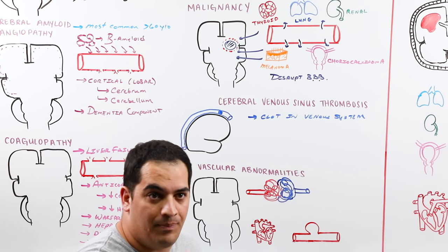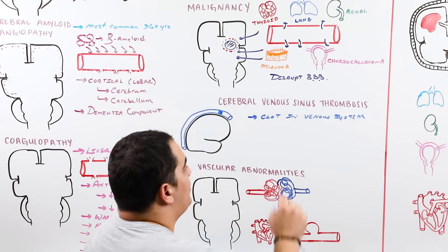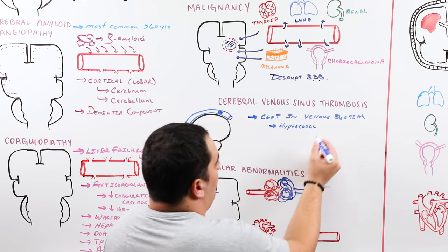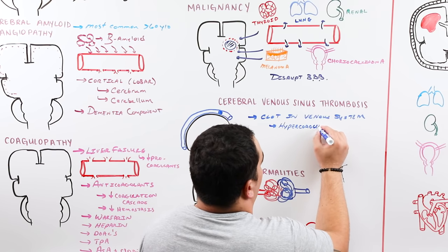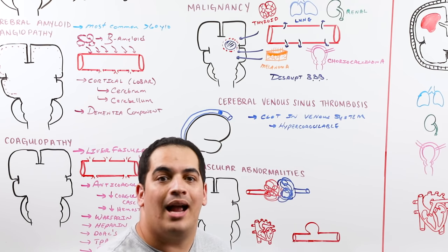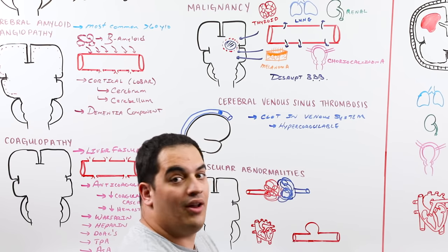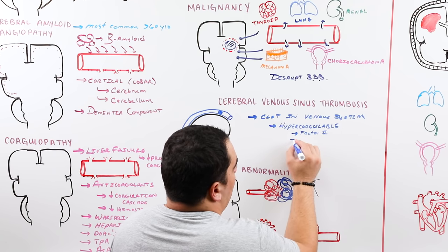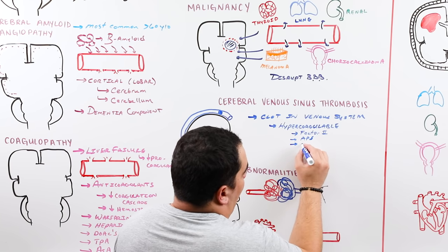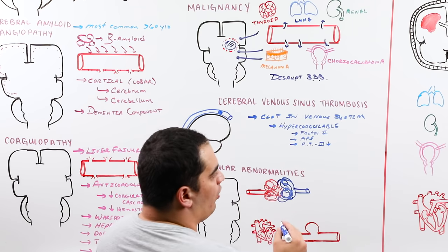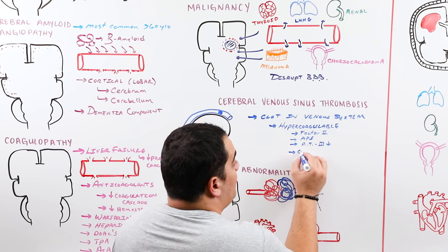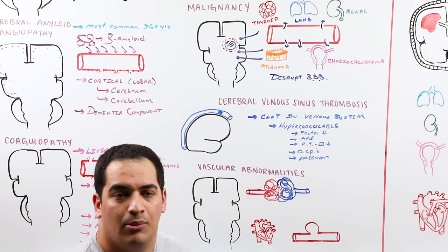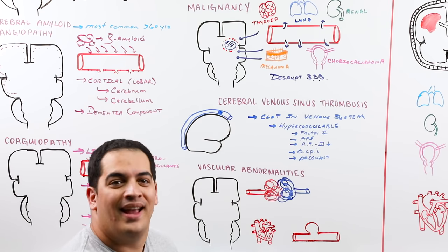CVST is caused by any hypercoagulable condition — inherited disorders like factor V Leiden, antiphospholipid syndrome, or antithrombin 3 deficiency, or acquired conditions like oral contraceptive use or pregnancy — all of which increase the risk of clot formation in the cerebral venous system.